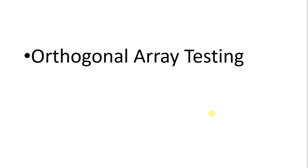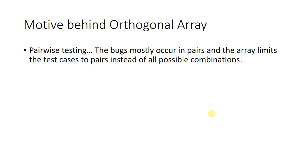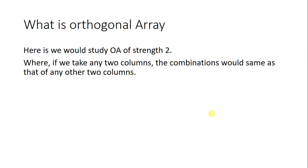There are different types of orthogonal arrays. In this lecture we will study the orthogonal array of strength 2 — there may be orthogonal arrays of strength 3, 4, or 5, but for now we are discussing strength 2. The rule for strength 2 is: if you take any two columns from that array, all the combinations of those two columns will be the same as the combinations from any other two columns.